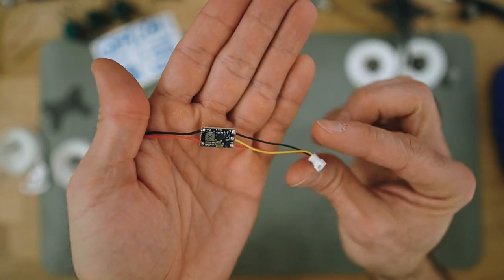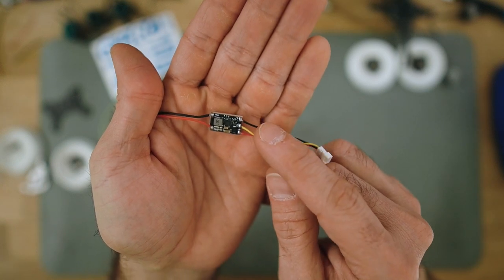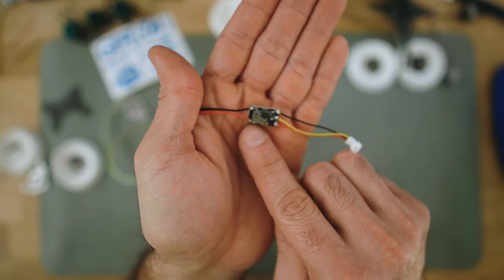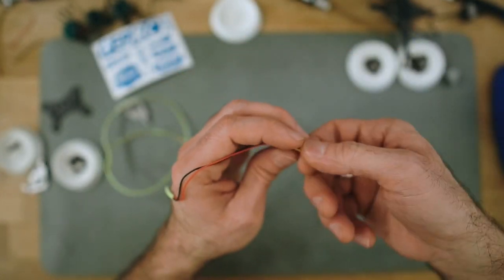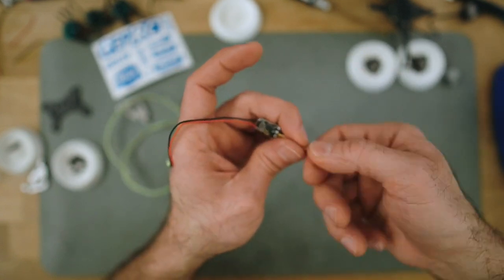We have here the back connector here, signal in the middle, negative down, positive up for the output. Let's just shrink wrap it and then we can proceed to put it in the frame.